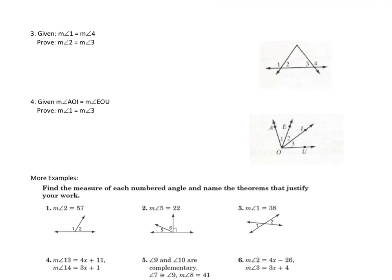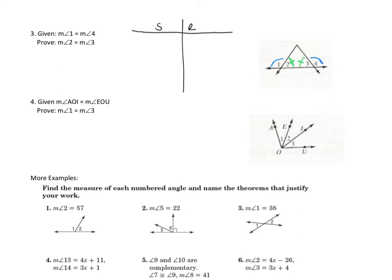Let's take a look at the next proof. On this one, I am given that the measure of angle 1 equals the measure of angle 4. I need to prove that the measure of angle 2 equals the measure of angle 3. Notice that angles 1 and 2 add up to 180, and angles 3 and 4 add up to 180 — so let's use those. We'll set up our T-chart, and as always we start with the given: the measure of angle 1 equals the measure of angle 4.